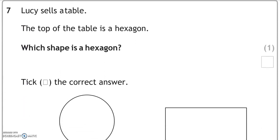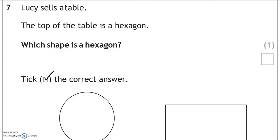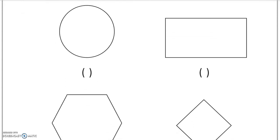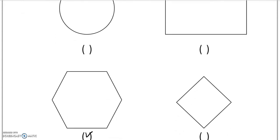Lucy sells the table. The top of the table is a hexagon. Which shape is a hexagon? Tick the correct answer. So hexagon has 6 sides, and that's this shape here.